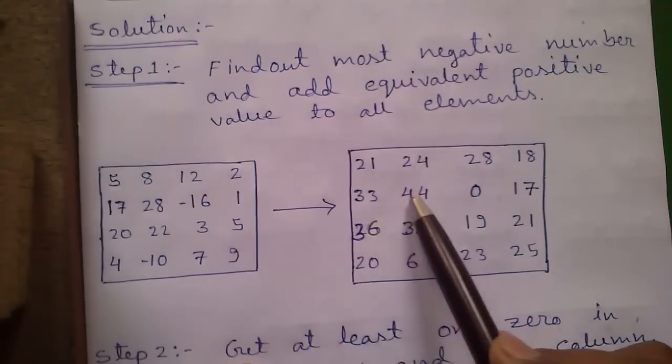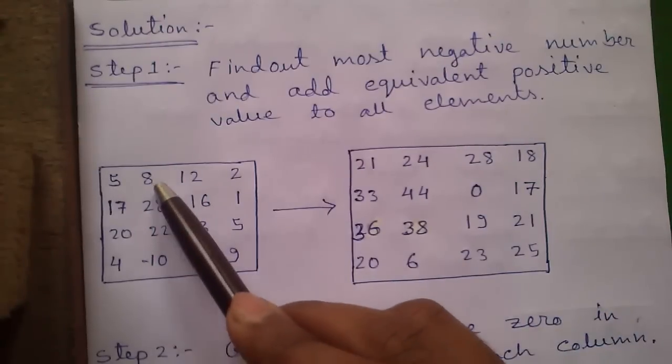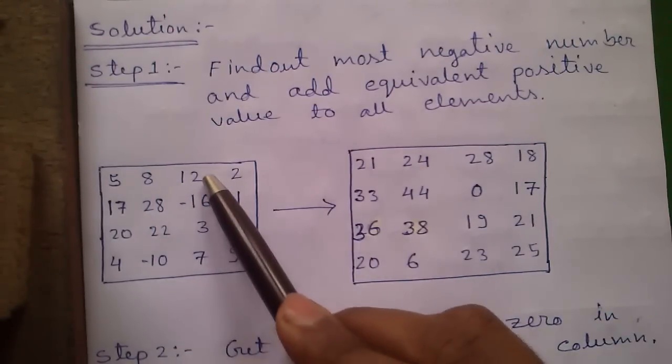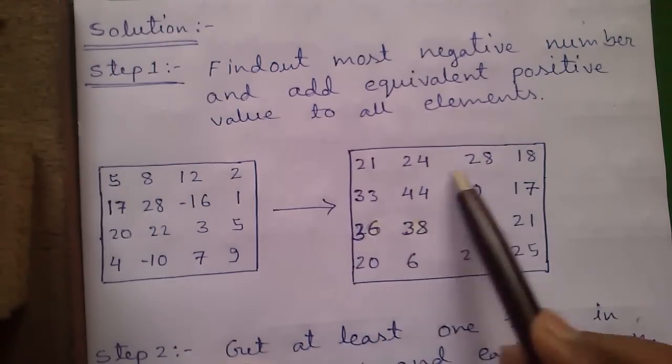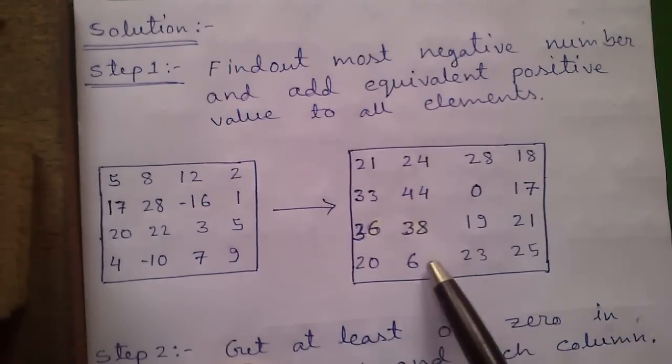So that will give us 5 plus 16 equals 21, 8 plus 16 equals 24, 12 plus 16 equals 28 and so on. Do the operations to all elements.